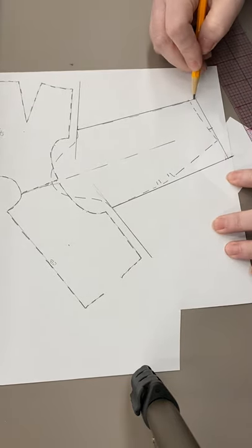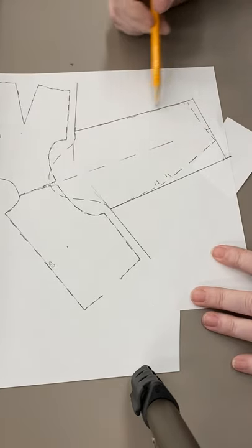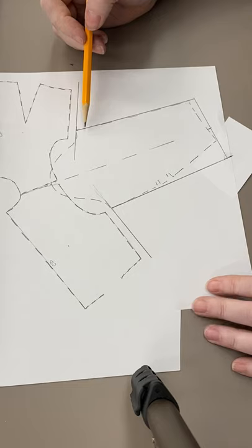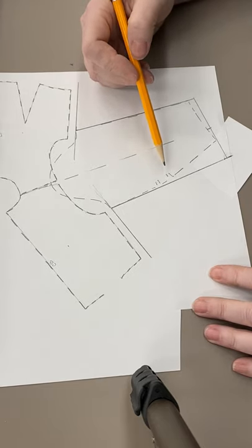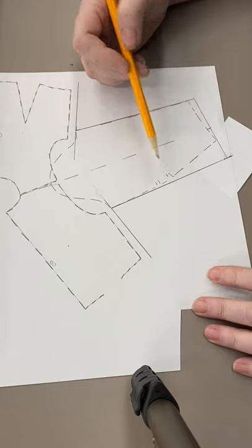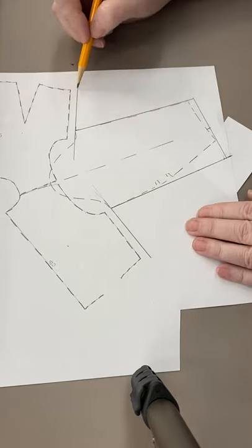Now if you're using the male sloper, this shape of the sleeve is already done for you. It's already achieved for you because you didn't have the articulated elbow. Okay, now this becomes our new outline.